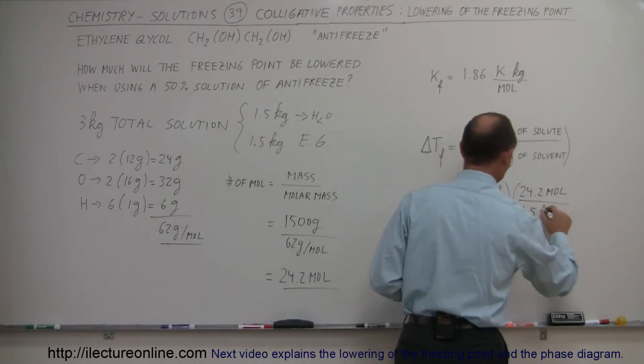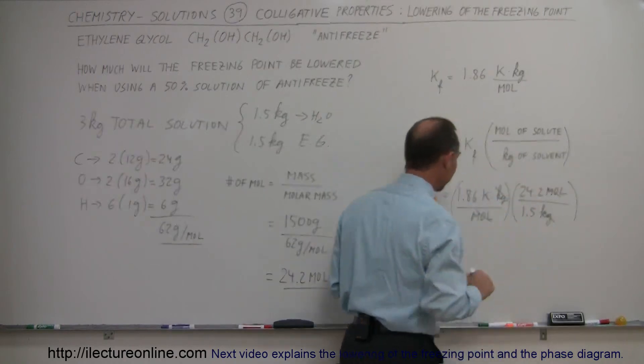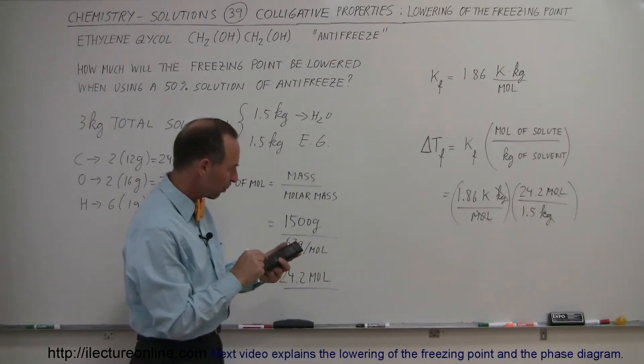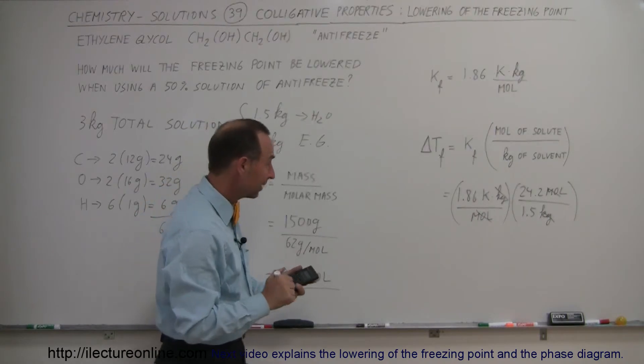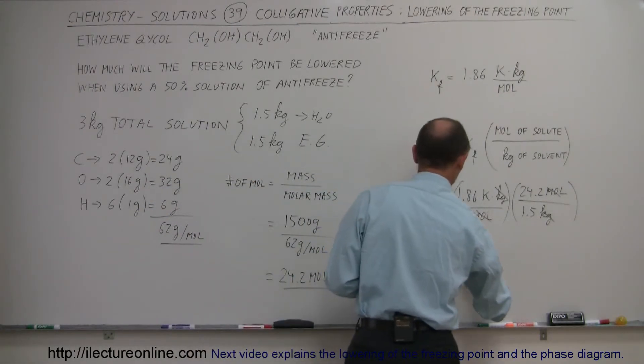Notice that the kilograms cancel out, the moles cancel out. We're simply left with Kelvin degrees. So 24.2 times 1.86 divided by 1.5 equals 30 Kelvin.